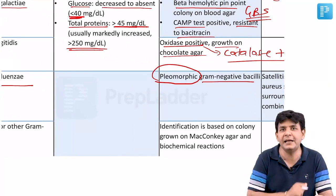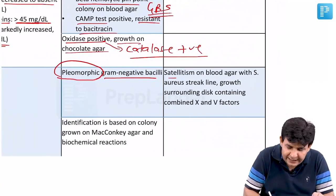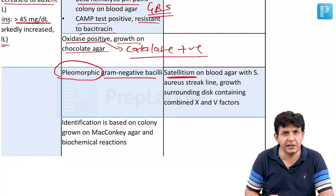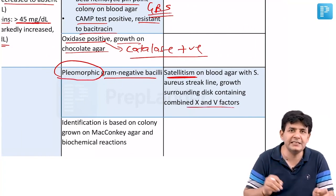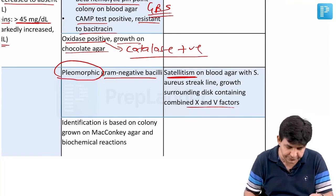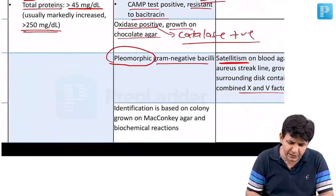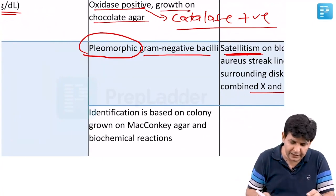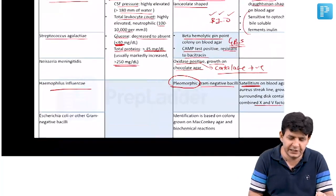Haemophilus influenzae is pleomorphic - it changes shape. It is a pleomorphic gram-negative bacillus or coccobacillus. Satellitism is observed on blood agar. It requires factor X (hemin) and factor V (NAD) to grow better. Others can be grown on MacConkey agar or blood agar.